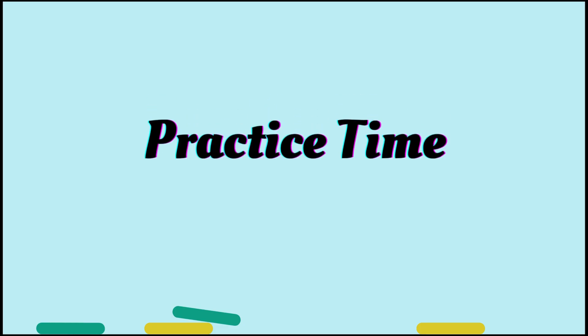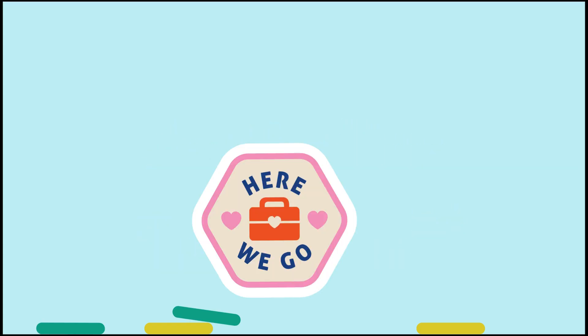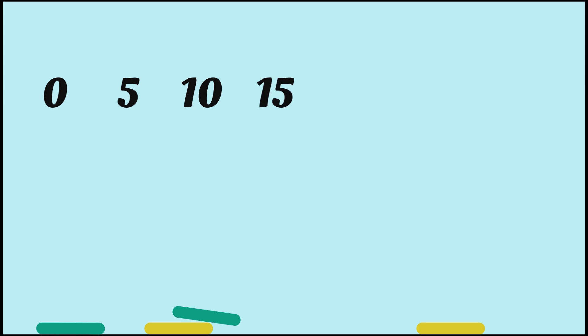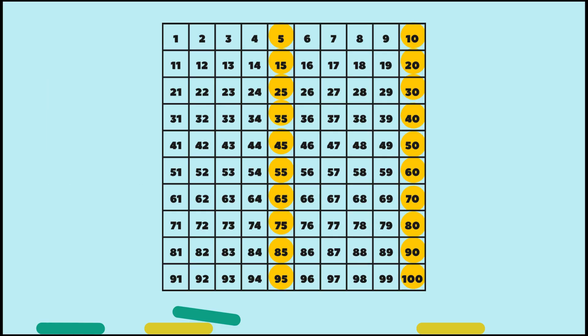All righty! Let's get our practice in. Just follow along with me, got it? We will start from zero and count by fives all the way to fifty. Ready? Here we go! The first number in the five times table is zero. Five, then ten, then fifteen, then twenty, then twenty-five. Next up, thirty, then thirty-five. Keep going — forty, forty-five, and fifty. The five times table can go on and on, but we'll stick to these numbers.